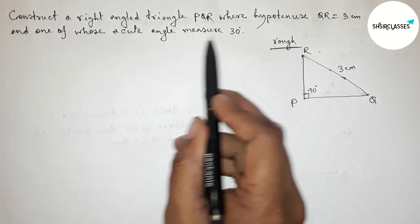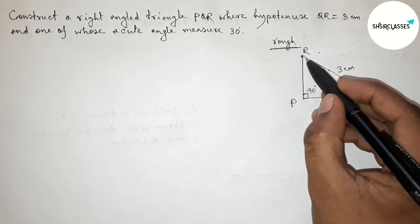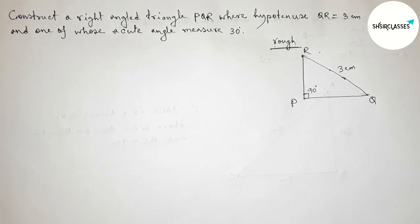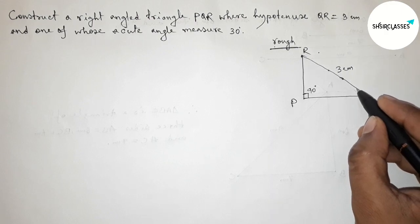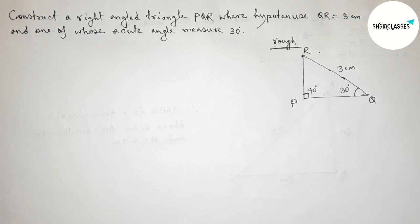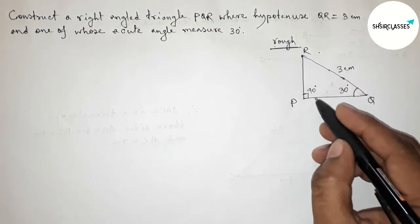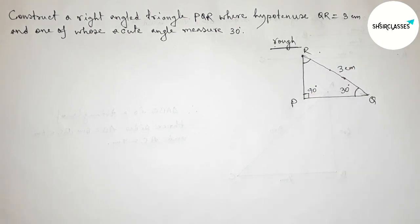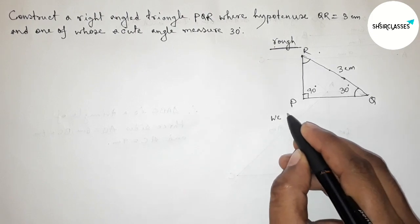One of the acute angles is 30 degrees. We can take angle R as 30 or angle Q as 30 — your choice. Here I am taking angle Q as 30 degrees, but you can choose angle R as 30 degrees. Next we have to find out the value of angle R.